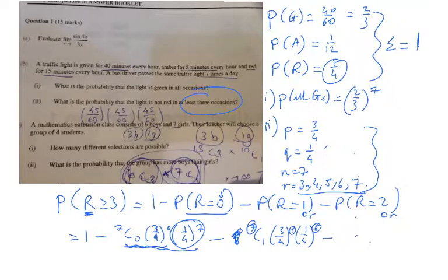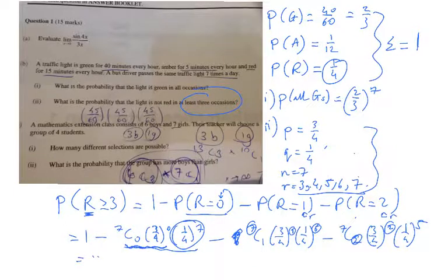And finally, the case where you have 2 non-red traffic lights: 7C2, 3 over 4 to the power of 2. Remember, the power of the p follows the subscript of the combination. Finally, 1 over 4 to the power of 5. And just use your calculator, making sure you enter all the numbers correctly and you should get your right answer.